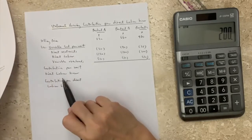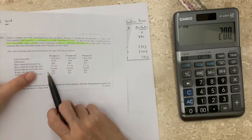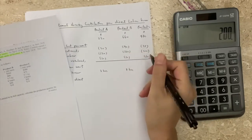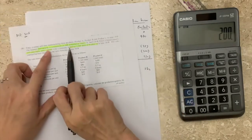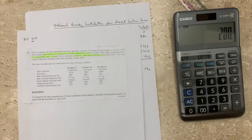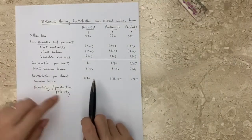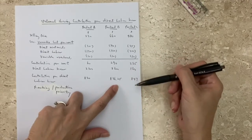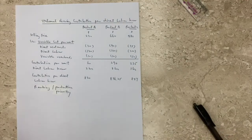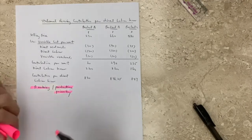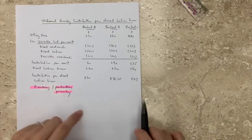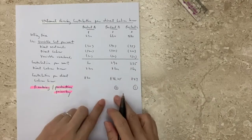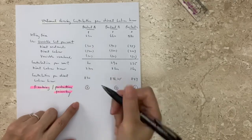Direct labor hours per unit are given: product A = 3 hours, product B = 8 hours, product C = 5 hours — this is our constraint. Contribution per direct labor hour: product A = $60 ÷ 3 = $20; product B = $290 ÷ 8 = $36.25; product C = $235 ÷ 5 = $47. Now we make our production priority ranking: first priority goes to product C, second to product B, and if we still have capacity, product A.